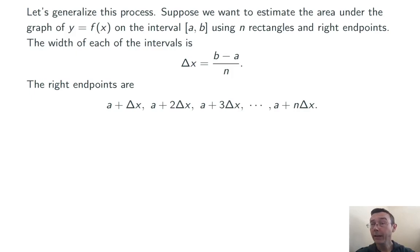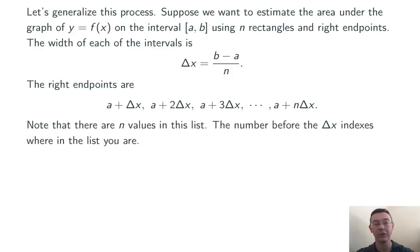Then the right-hand endpoints of the rectangles are going to be a plus delta x, a plus 2 delta x, a plus 3 delta x, and so on, up to a plus n delta x. Start at the left-hand endpoint a, move over by the width of one rectangle, then move over by the width of another rectangle. These are the spots where you're going to want to measure the heights of the rectangles by plugging into the function.